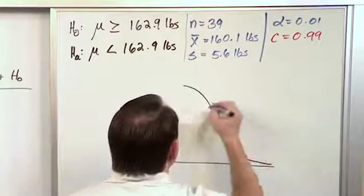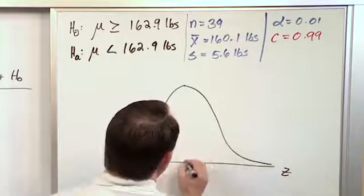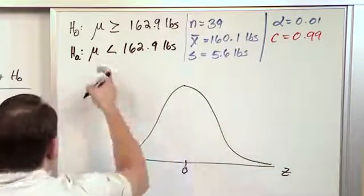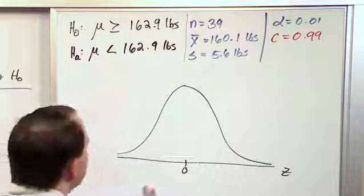So here, we're going to draw a little sketch of our distribution. It's a normal distribution. It's always centered about 0, and it's a left-tail test. All right, so this data is collected.